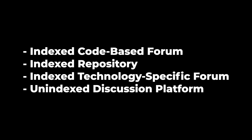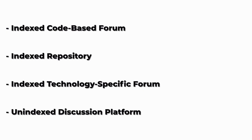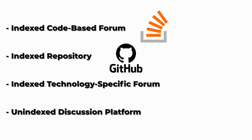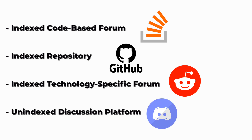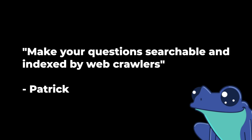I've categorized four different types of forums and Q&A sites. Feel free to pause to read them over. Here are some specific examples: indexed code-based forums like Stack Overflow; indexed repositories like GitHub Issues; indexed technology-specific forums like r/ethdev; or unindexed discussion platforms like a Chainlink Discord. One of the key differentiators in these categories is the indexed keyword. We typically want to ask questions on forums that web crawlers have gone through and indexed.